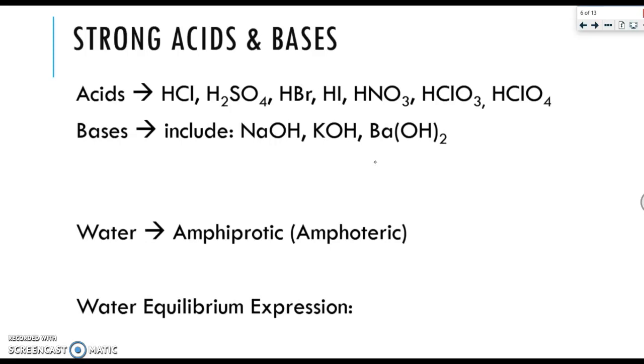For bases, they include things like NaOH, KOH, and BaOH2. But more specifically, a strong base is when you have a 1A, an alkali metal, plus an OH, or when you have a 2A metal, an alkaline earth metal, plus OH. So any time it's an element that's found in the first two columns of the table with an OH, it's considered strong.